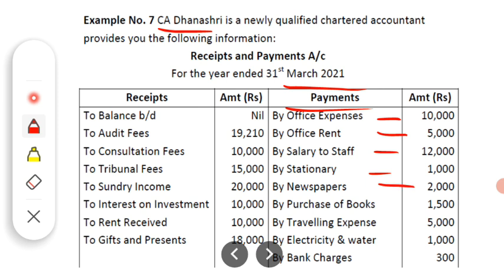Then the fourth payment is for stationery of Rs. 1,000. After that, the next payment is for newspapers of Rs. 2,000. We know that in a doctor's or lawyer's office, newspapers are made available for customers sitting in the waiting area. These newspapers are made available for customers and the expenses are incurred for customers related to the profession.